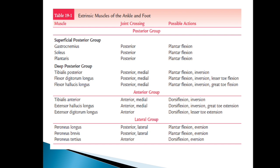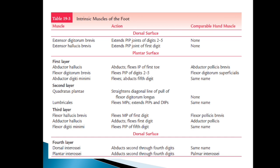The extrinsic muscles of the ankle and foot include: in the superficial group — gastrocnemius, soleus, and plantaris; in the deep group — tibialis posterior, flexor digitorum longus, and flexor hallucis longus. In the anterior group — extensor digitorum longus; and in the lateral group — peroneus longus, peroneus brevis, and peroneus tertius. Their possible actions are shown in the chart.